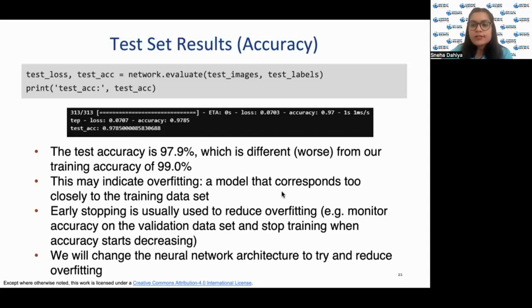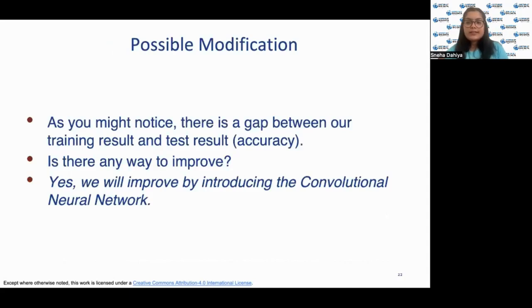Overfitting in terms of machine learning is a model that corresponds too closely to the training dataset. In general, overfitting can be reduced by using cross-validation and monitoring the assessment metrics on a validation or testing dataset while training. We should stop training when the assessment metrics become worse. As we have seen earlier that there were some gaps in the train set accuracy and test set accuracy. Do you guys think that there are any ways to improve? There are. We can use convolutional neural networks to avoid overfitting. The rest of this lecture will focus on convolutional neural networks.